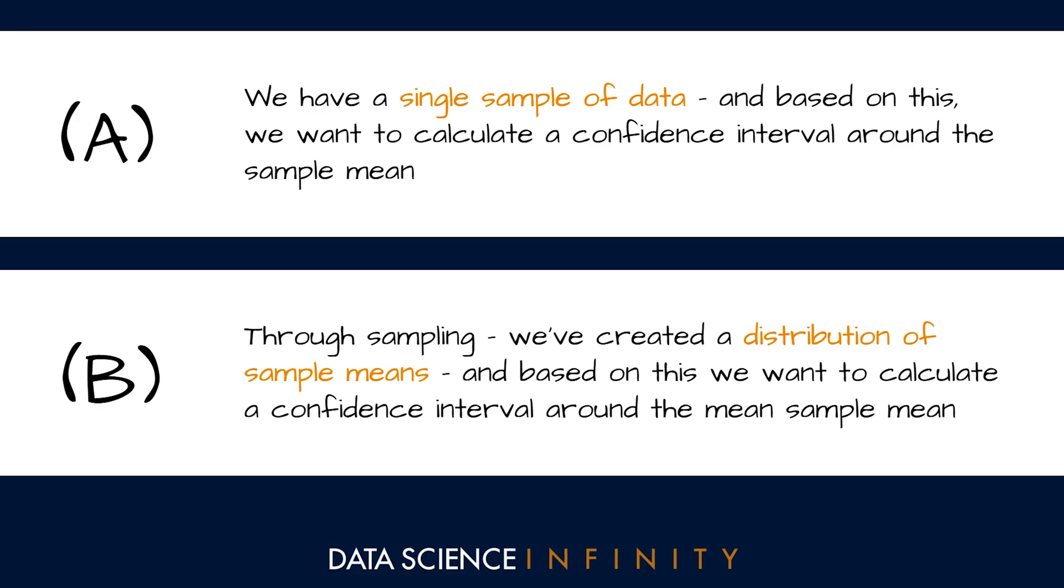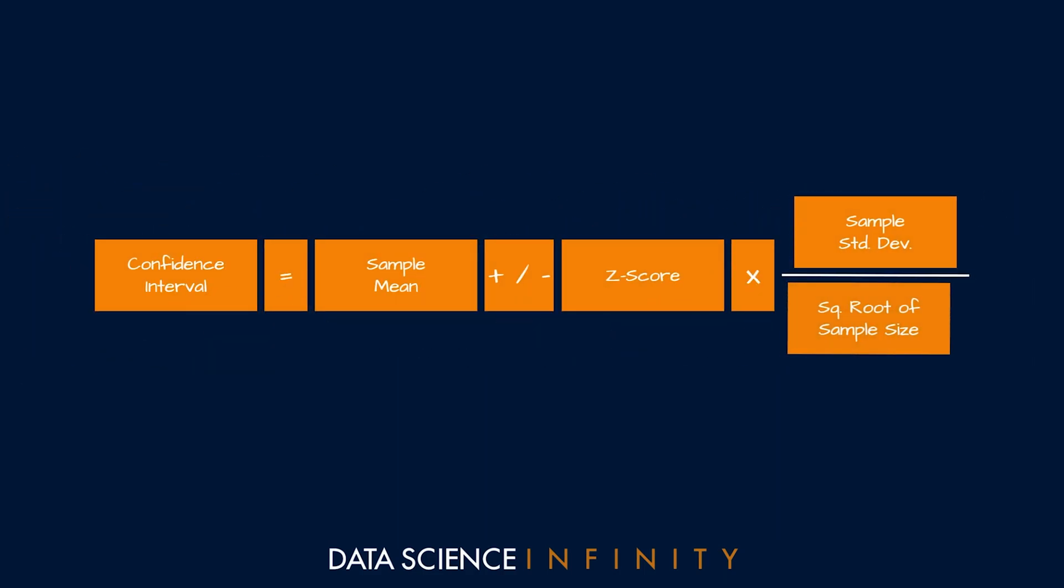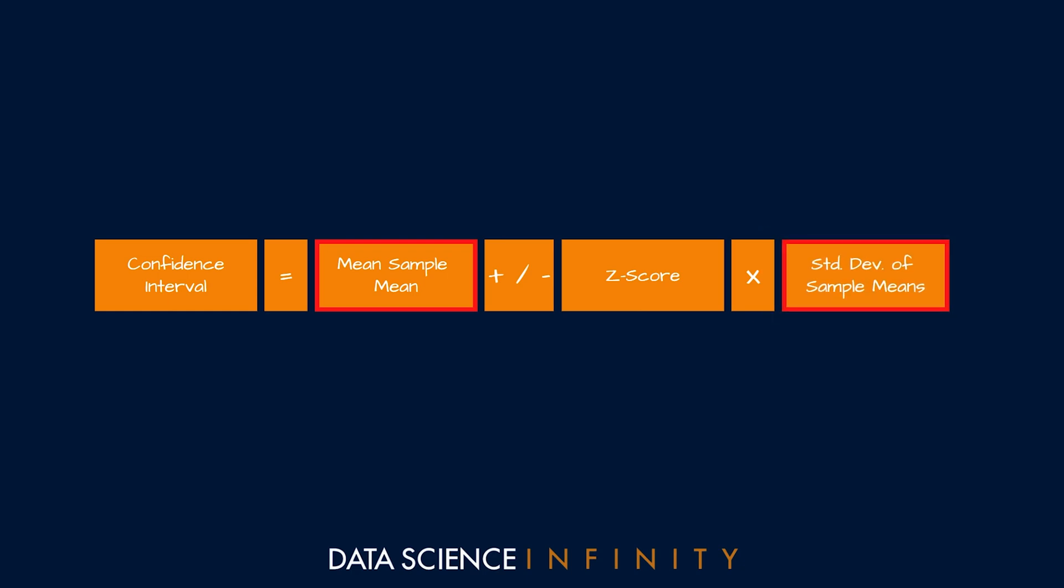For scenario b we essentially apply the same formula you can see the one we've just used on screen, but since we're not really using a sample mean in this case we instead use the mean of the sample means. Secondly, instead of the standard error being the sample standard deviation divided by the square root of our sample size, this is just the standard deviation of the sample means. So a subtle but very important difference to note if you're going to be sampling data and or using the central limit theorem.